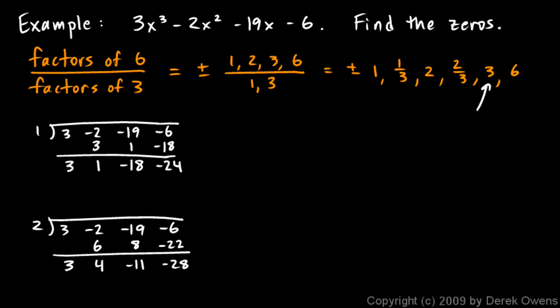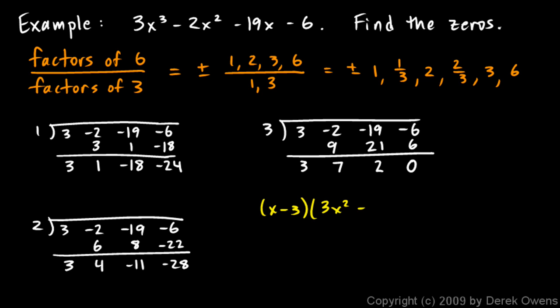So let's try the next one, which is the 3 over here, 3, negative 2, negative 19, negative 6. Bring down the 3, 3 times 3 is 9, and we add there and we get a 7. 7 times 3 is 21, and we add there and we get a 2, and then 2 times 3 is 6, and that works. We get a 0 remainder. So, x minus 3 is a factor, and then these coefficients give us the next factor, 3x squared plus 7x plus 2.